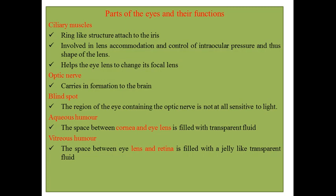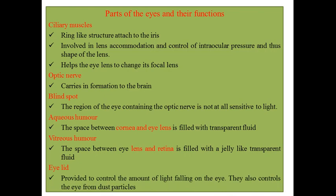The vitreous humor is the fluid found between the eye lens and the retina. The last part is the eyelid, which helps control the amount of light falling on the eye and also protects the eye from dust particles.